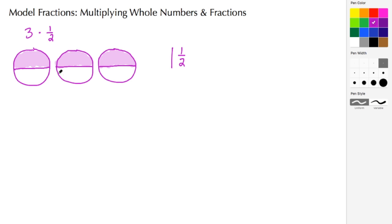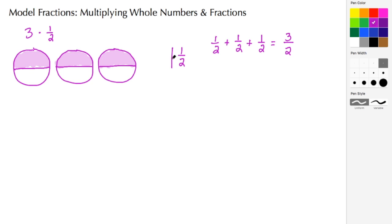So this is really one and a half. If you were to convert each one of these pictures into their corresponding fractions, it would be one-half plus one-half plus one-half. When you add fractions you keep your denominators the same and add your numerators, so this turns out to be three-halves. Three-halves comes out to be one and a half as a mixed number.